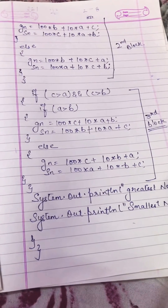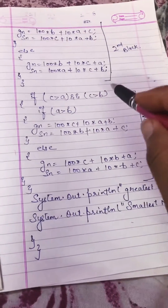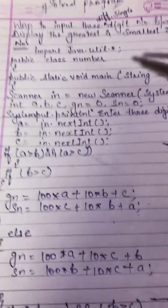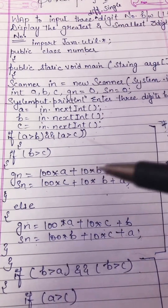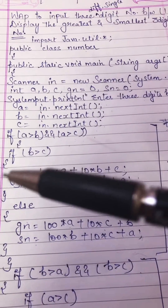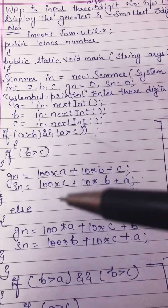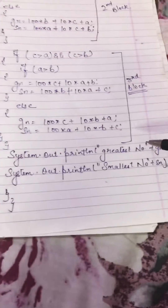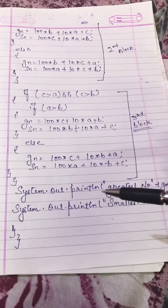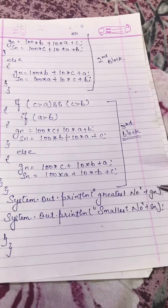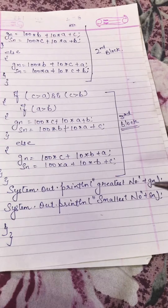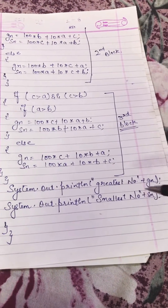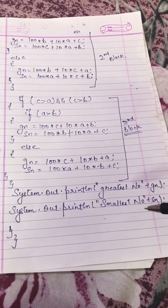I hope you all understand this concept — how to take three numbers, arrange them into digit places, and determine the greatest and smallest number. Finally, we use System.out.println to display: your greatest number is GN, and your smallest number is SN. Thank you.